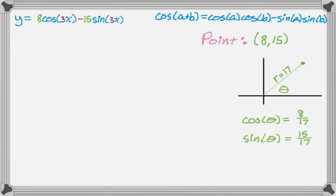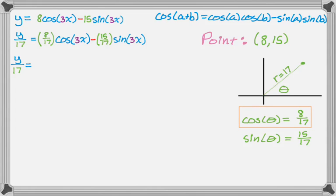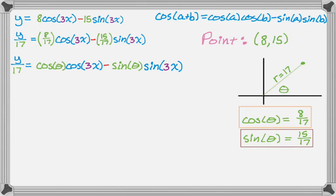So once I know all that, I can just work the problem straight through. So divide through by 17, and we get this. And now what I'm going to do is replace the 8 over 17 with cosine of theta. Cosine of 3x minus 15 over 17, if we look, is actually just sine of theta. So sine theta sine of 3x.